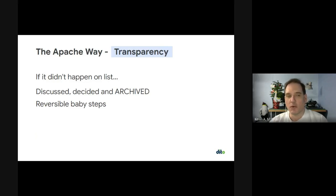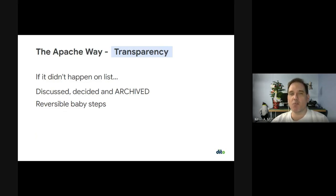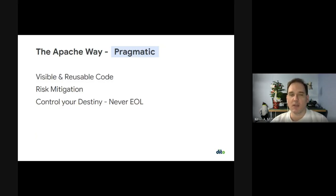As Danny pointed out, we don't necessarily know everything about what's going on — we aren't forecasting the future. So we want to make sure we don't do anything that breaks. One of the concepts we try to espouse is the reversible baby step. If we have something that's a big change, we try to do it in small steps so that we can reverse it and not break things in the meantime.